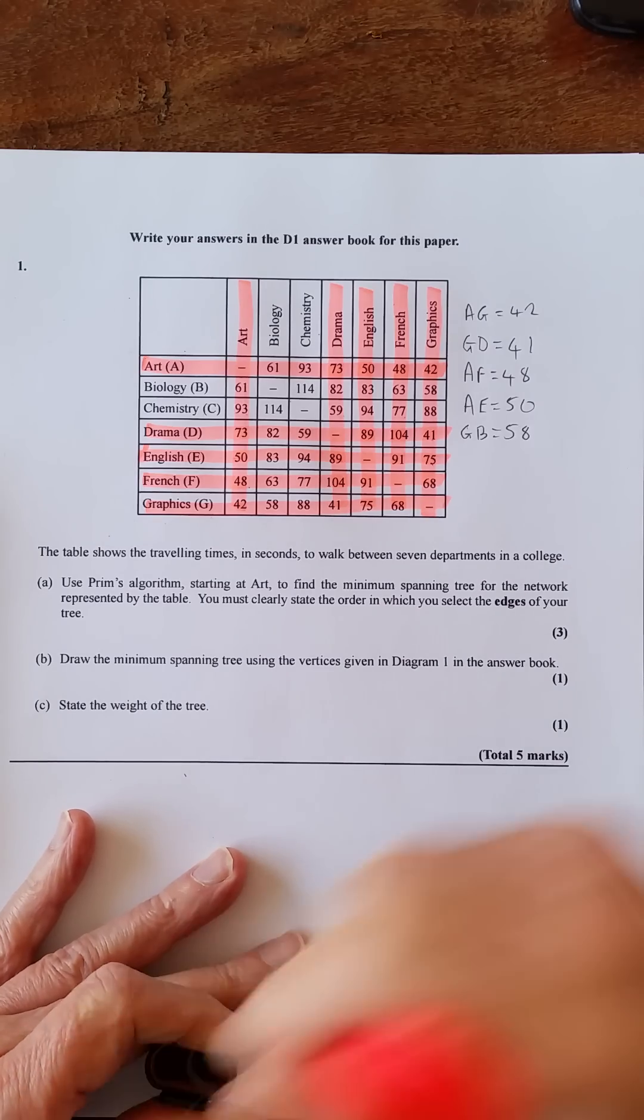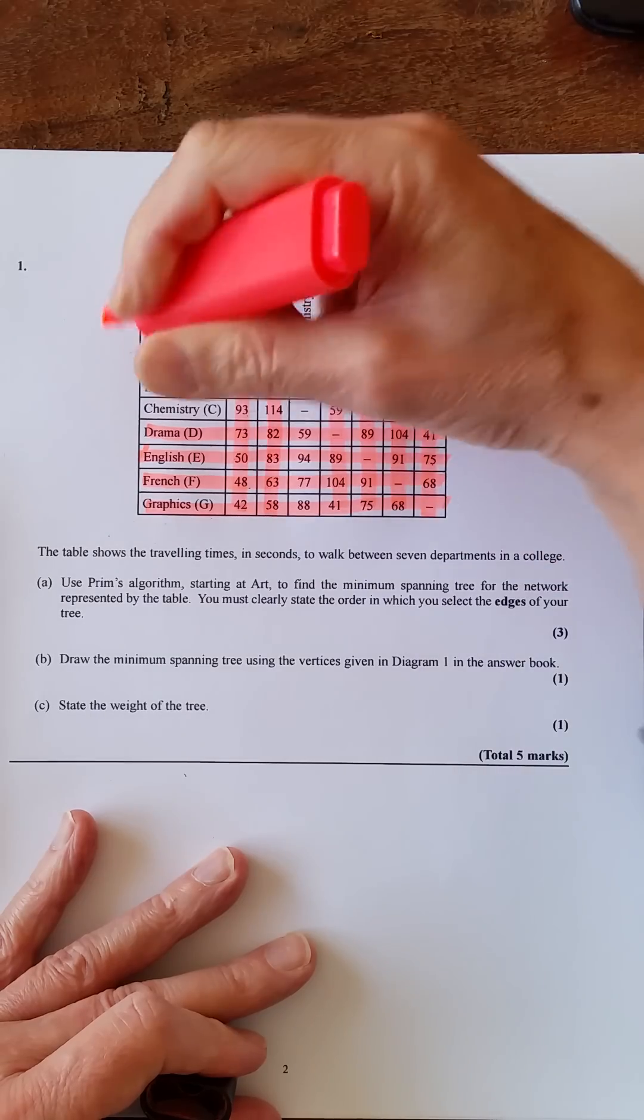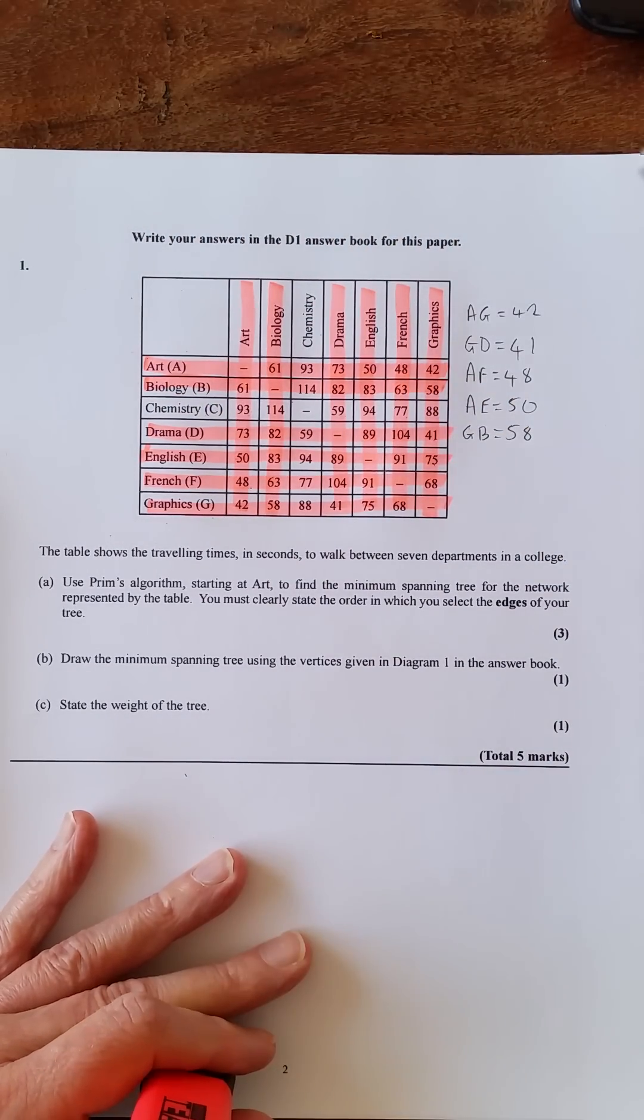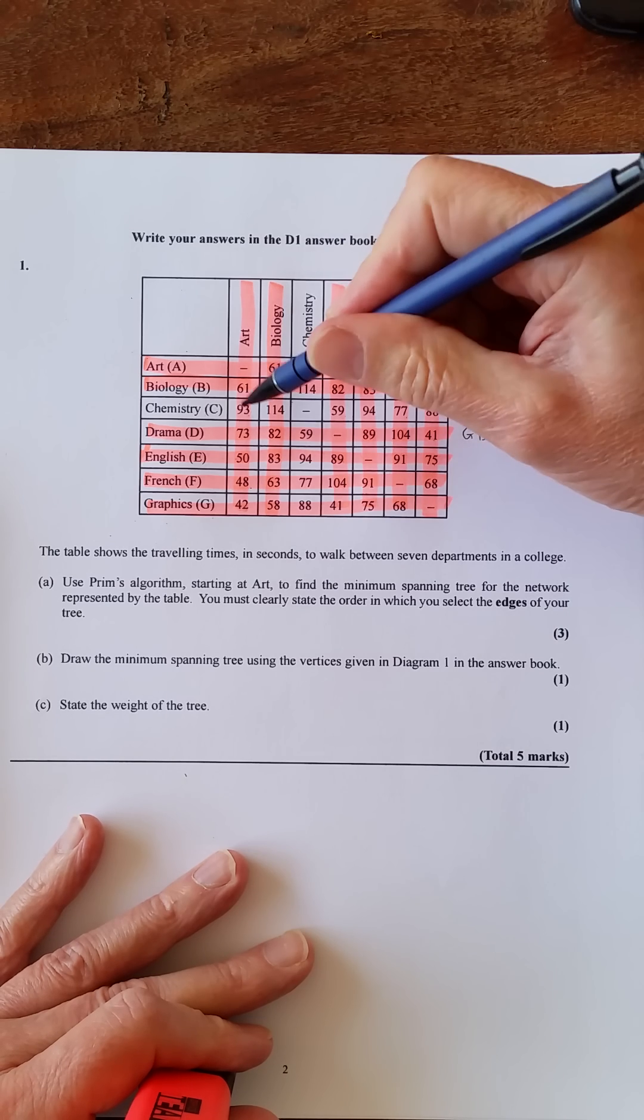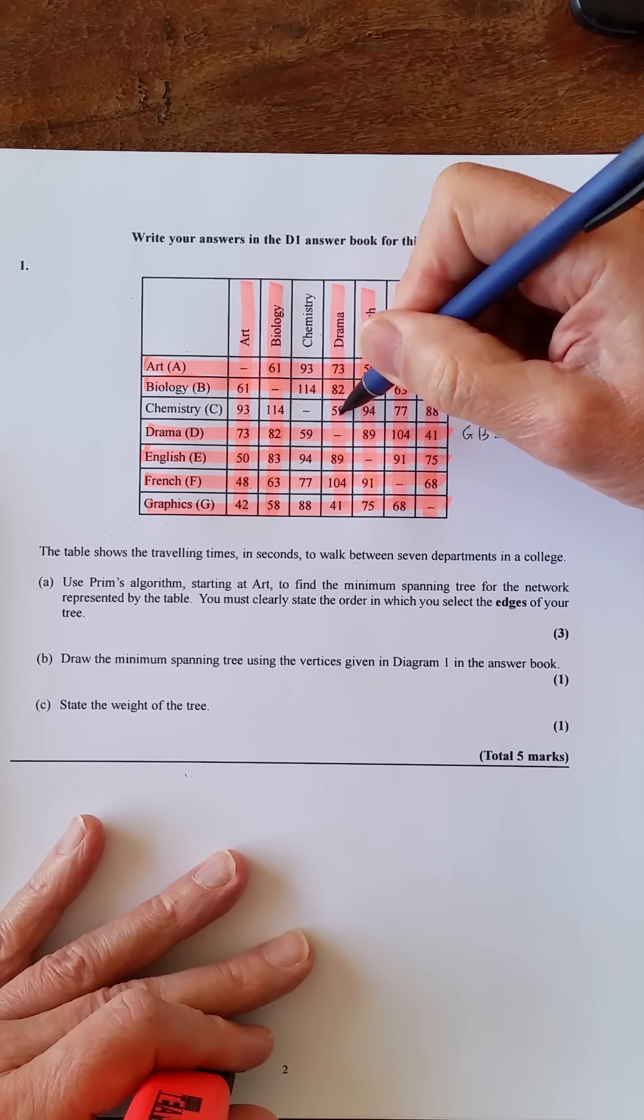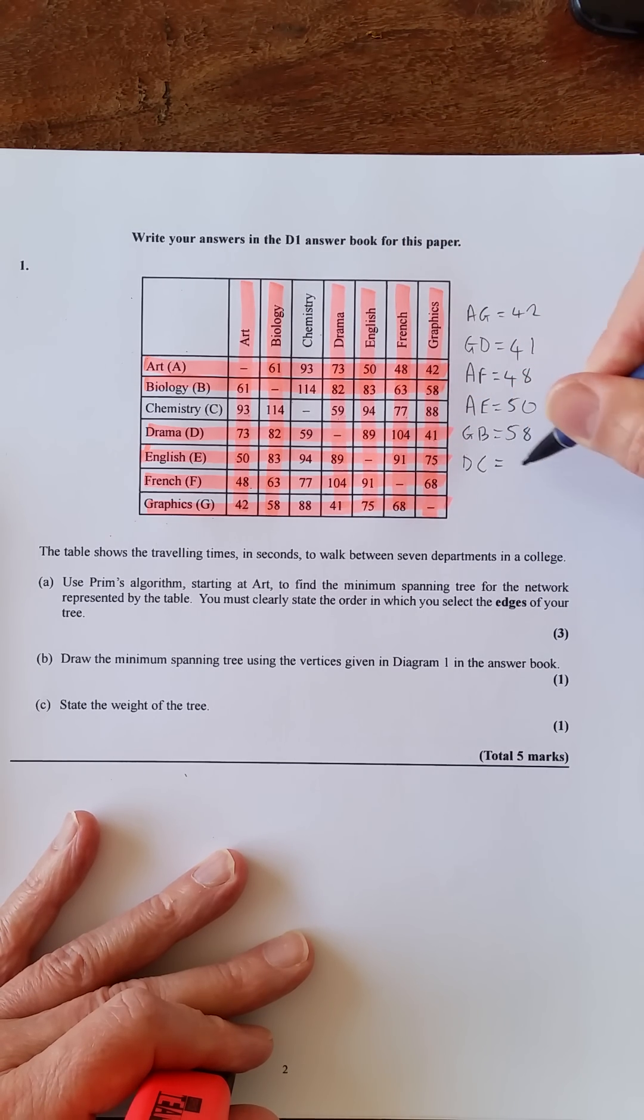So what we'll do is we'll get rid of B, and now we're just looking at the last column for C for the shortest. So 93, 114, 59, 94, 77, 88, and 59 is the shortest. So we've got that is D and C, so DC equals 59.